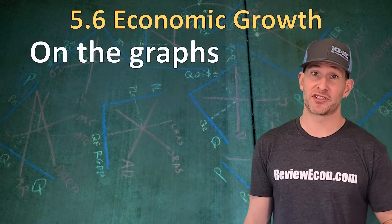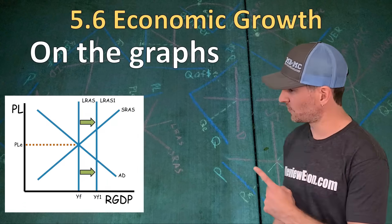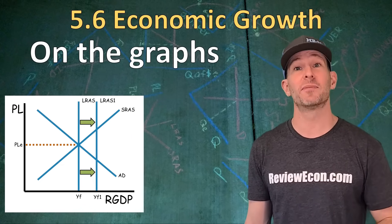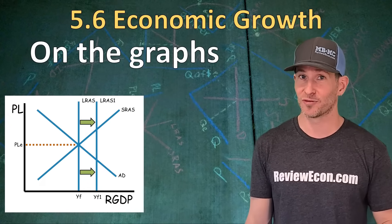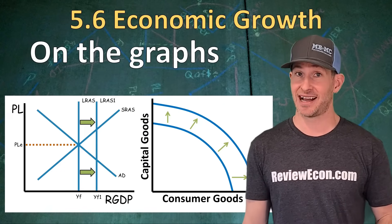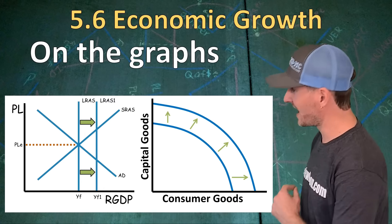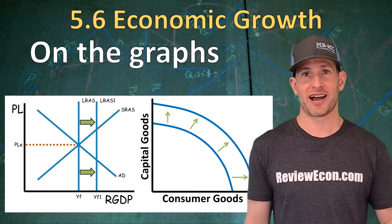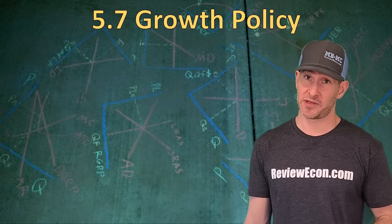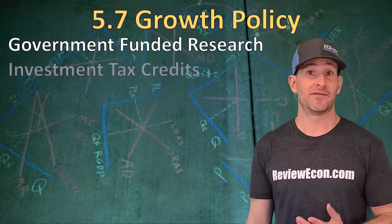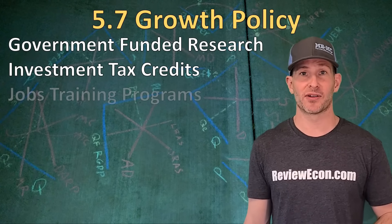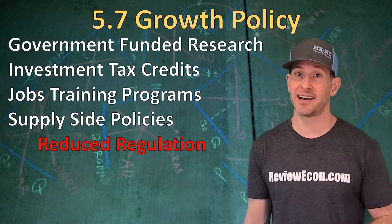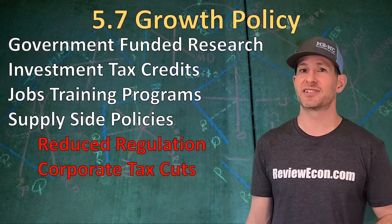So how do we show economic growth on the models? On the ASAD model, we see economic growth as a rightward shift of that long-run aggregate supply curve, because economic growth is an increase in long-run potential output, not current output. On the production possibilities curve, we see economic growth as an outward shift of that curve — it becomes possible to produce more capital goods and consumer goods. Policies the government can enact to increase economic growth include government-funded research to increase technology, investment tax credits to encourage capital formation, jobs training programs to increase human capital, and supply-side policies to reduce regulations on businesses and cut corporate taxes.